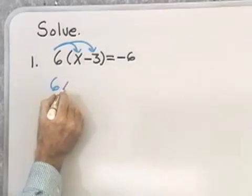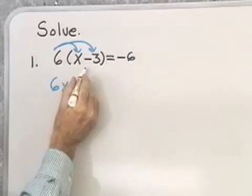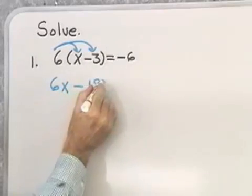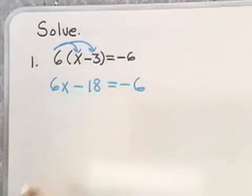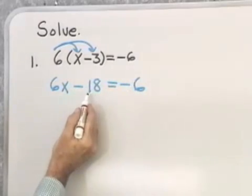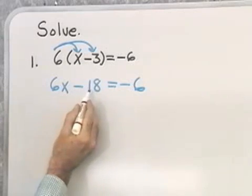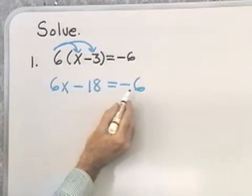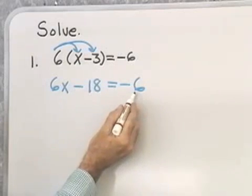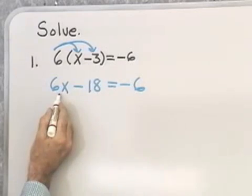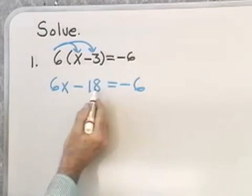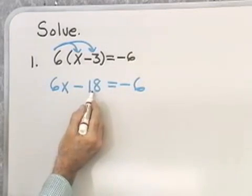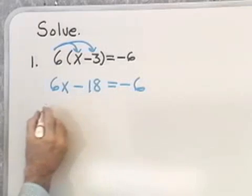6 times x is 6x, and 6 times 3 is 18. Now I'm going to use the addition property. This is a variable term, and those are constant terms. I want all the variable terms on the left side and all the constant terms on the right side.